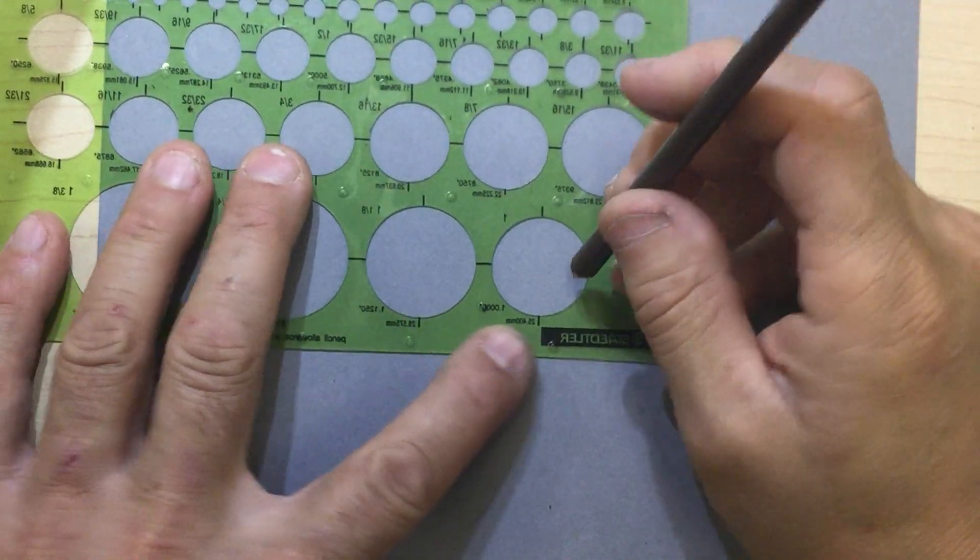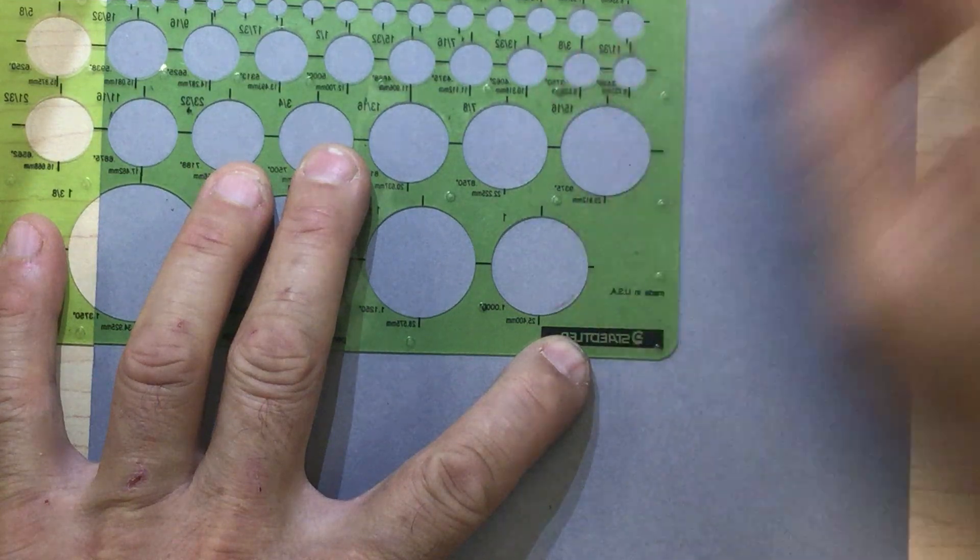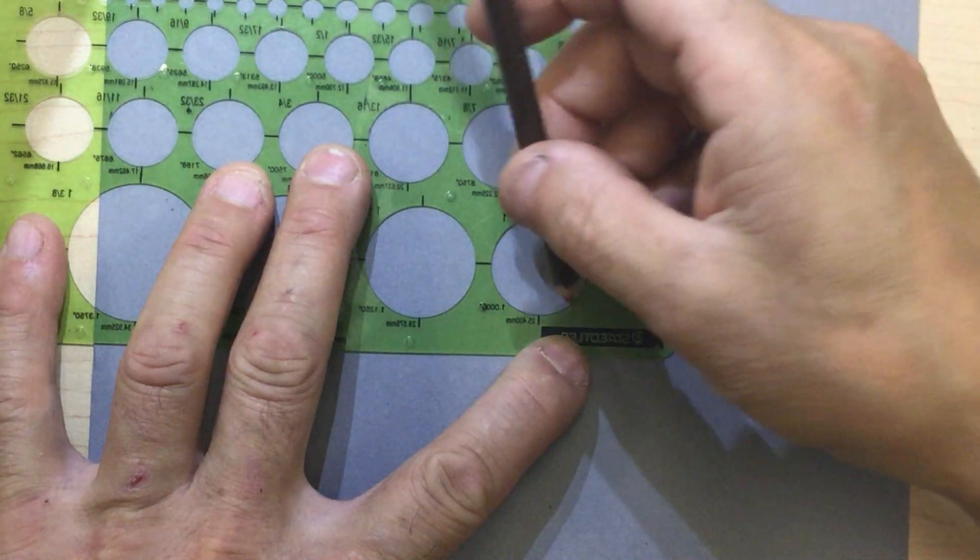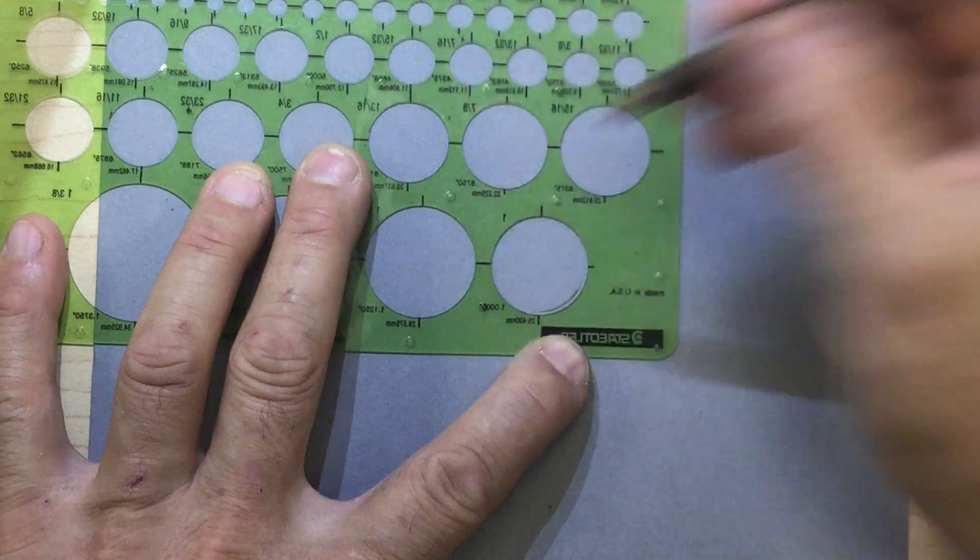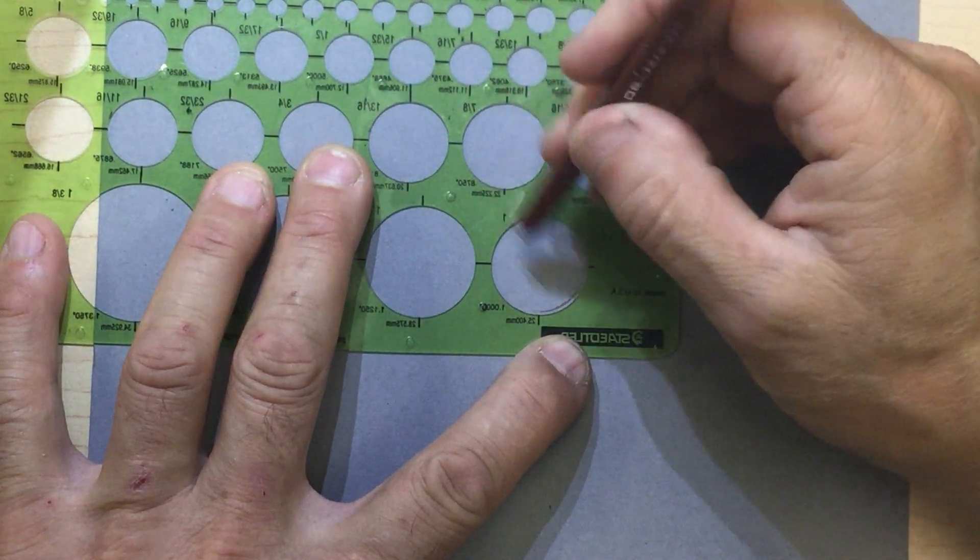You're going to start off by doing a weighted line starting at the back. I'm going to do chocolate. Of course my light source is over here.